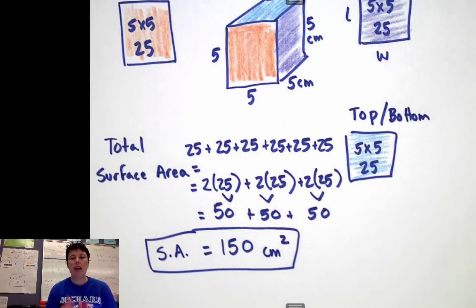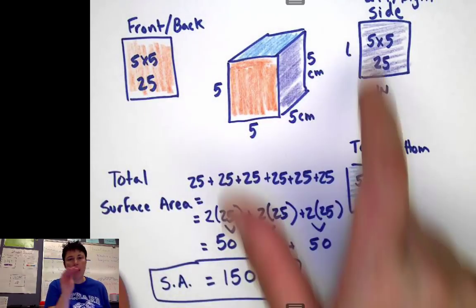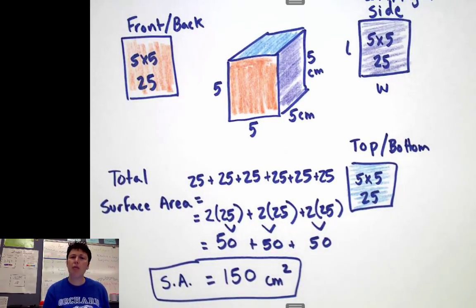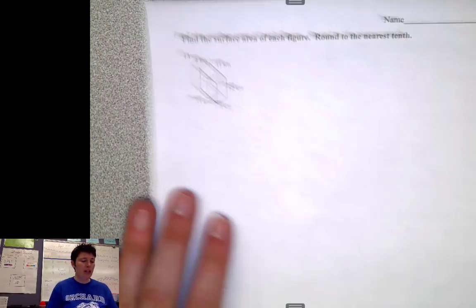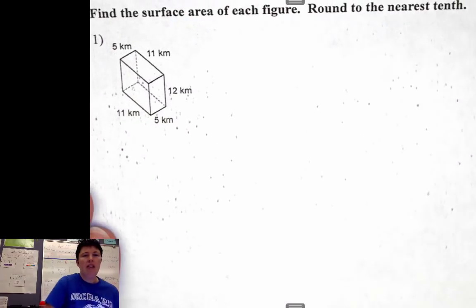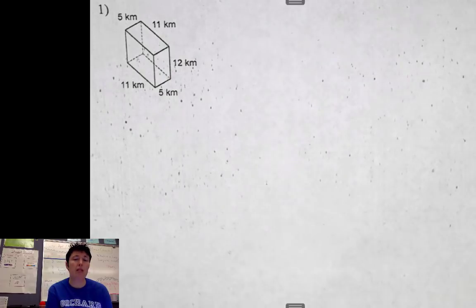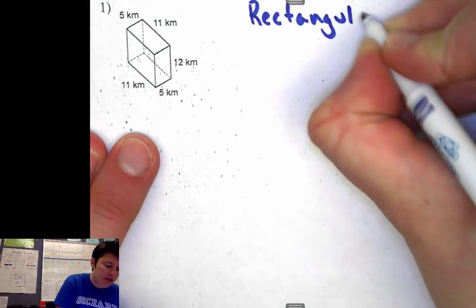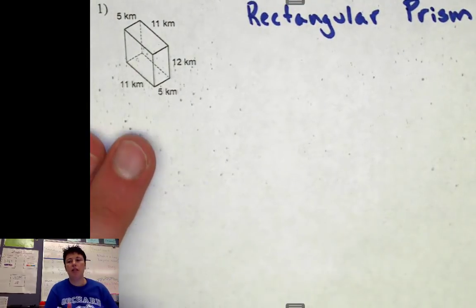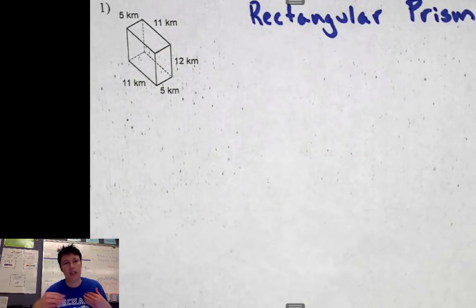Surface area is looking at the area of all the different faces of the object. Boxes are the easiest because every face — top, bottom, left, right, front, and back — is a square. But prisms can be more complicated. Prisms don't necessarily have to be made of a perfect square, so let me show you some different examples that are a little more complicated. Here's one — I decided not to draw it myself but just to print it out. Here's a prism that looks like a box, but it's not a perfect box made of squares. It's called a rectangular prism because it's made of rectangles. Our job is to find the surface area, so we're going to break it down into all its parts.